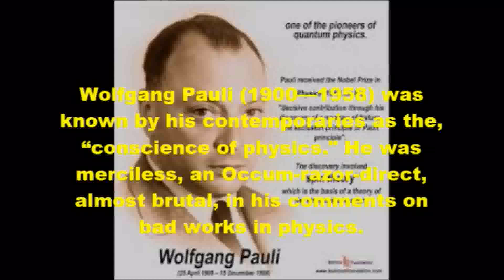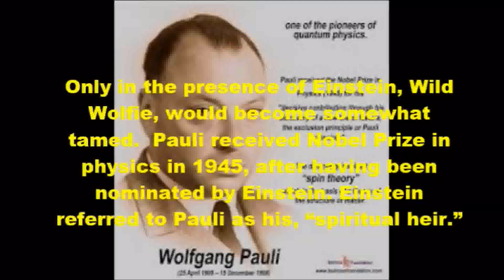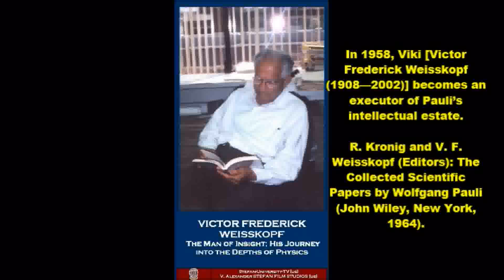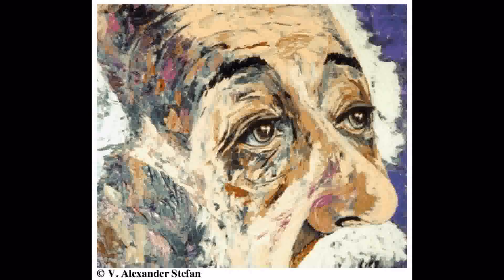Wolfgang Pauli was known by his contemporaries as the conscience of physics. He was merciless and razor-direct, almost brutal, in his comments on bad work in physics. Only in the presence of Einstein would Wild Wolfie become somewhat tamed. Pauli received the Nobel Prize in Physics in 1945, after having been nominated by Einstein. Einstein referred to Pauli as his spiritual heir. In 1958, Vicky — Victor Frederick Weisskopf, 1908–2002 — became an executor of Pauli's intellectual estate.